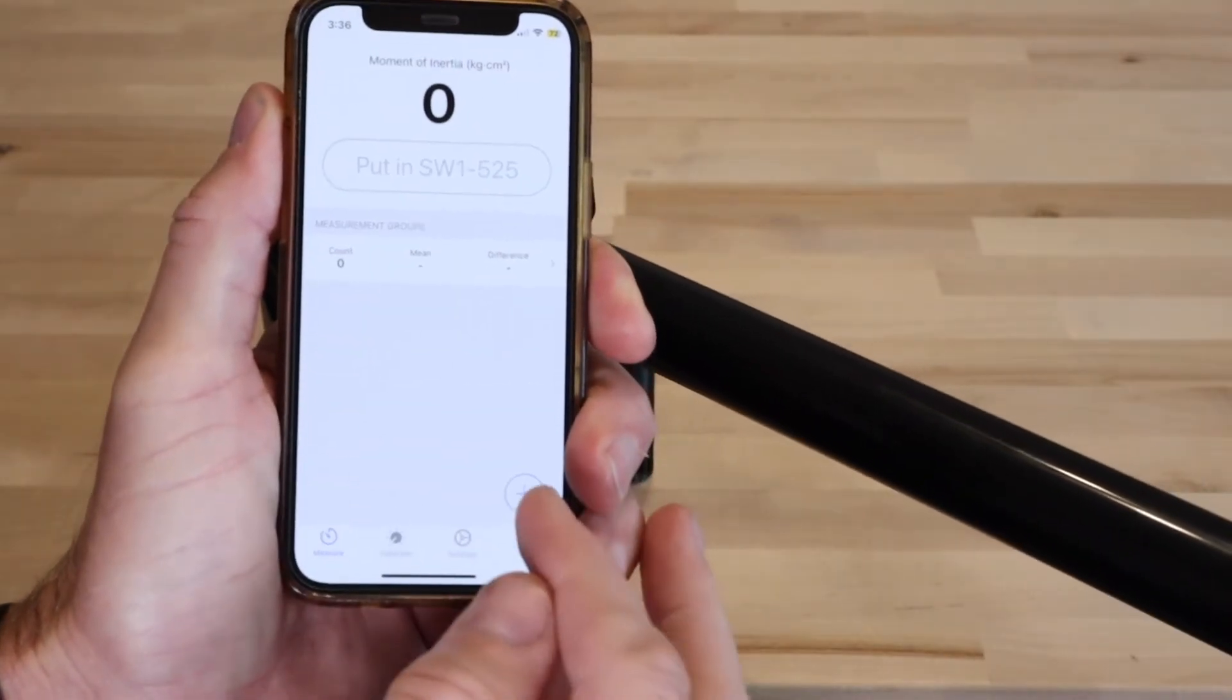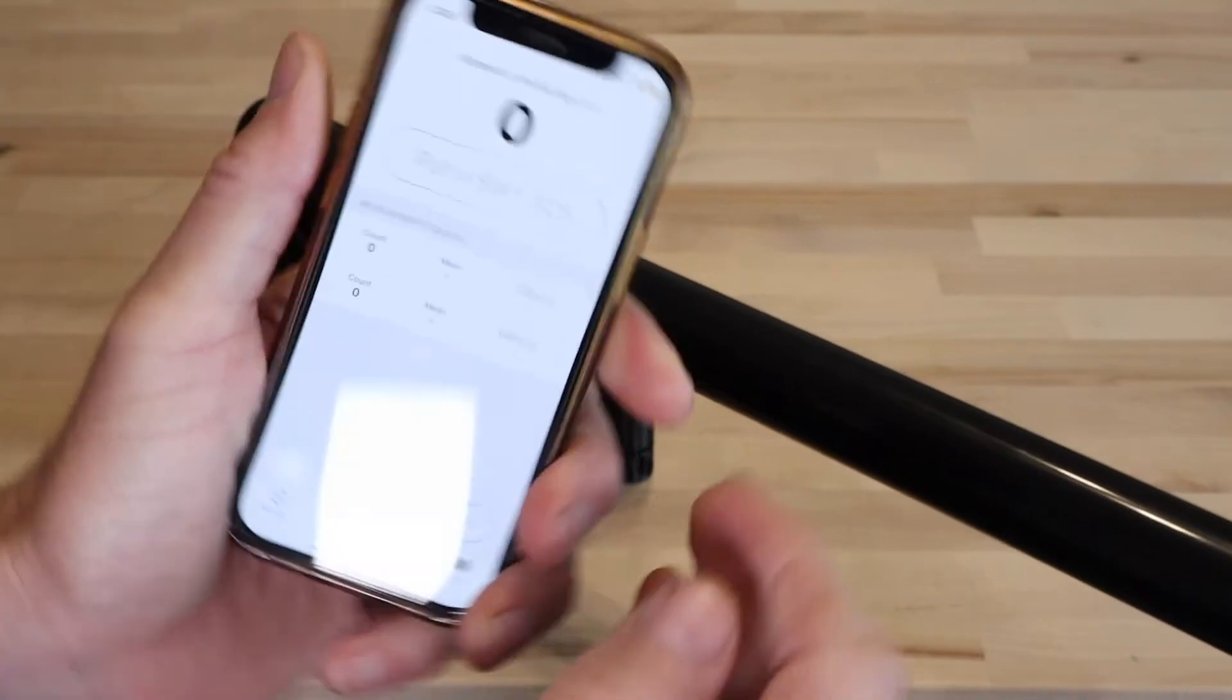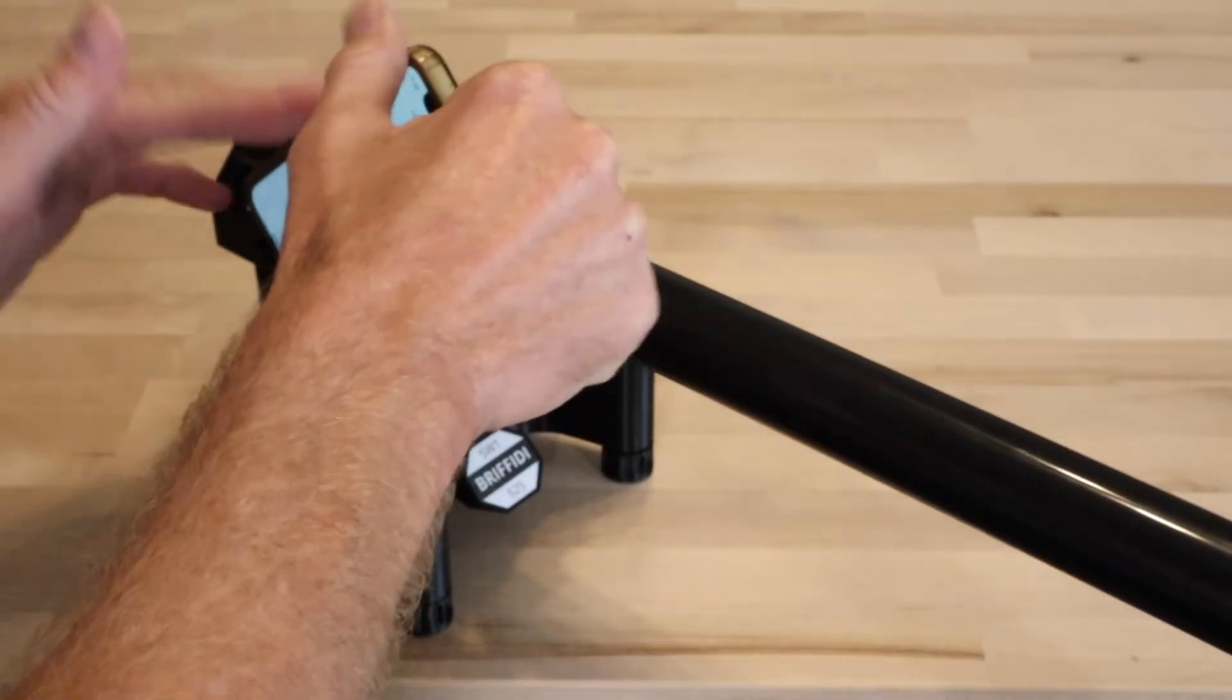On the measure tab, tap the plus button to add a new measurement group. Place your phone into the cradle, making sure that it's fully seated.